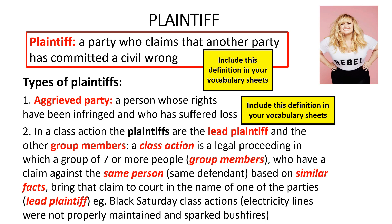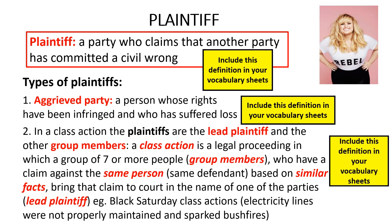The second type of plaintiff exists where there is a class action. A class action is a legal proceeding in which a group of seven or more people who have a claim against the same person based on similar facts bring their claim to court in the name of one of the parties. Find the term 'class action' in your vocabulary sheets and write this definition in there. Highlight the words in bold red italicized type — if you're ever asked to define a class action, try to include those highlighted words in your answer.